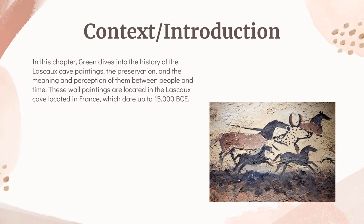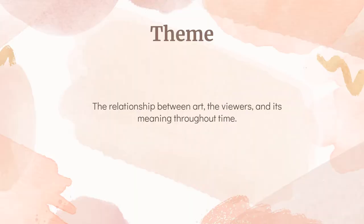Let's begin by introducing the context of this chapter. Green dives into the history of the Lascaux cave paintings, their preservation, and the meaning and perception of them between people and time. These wall paintings are located in the Lascaux cave in France, which dates back up to 15,000 BCE. The overall theme of this essay is the relationship between art, its viewers, and its meaning throughout time and to the people.